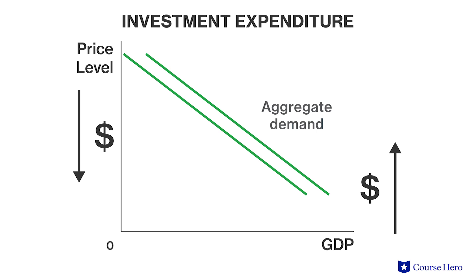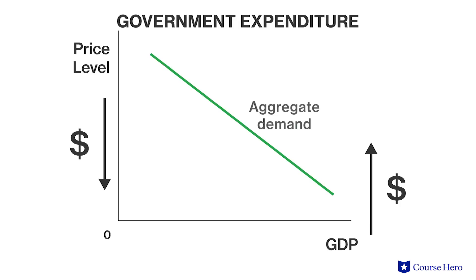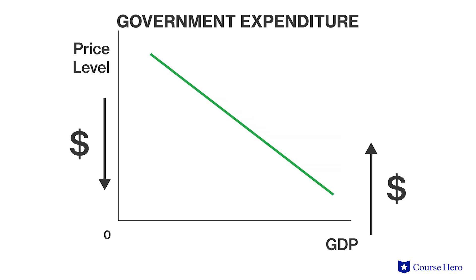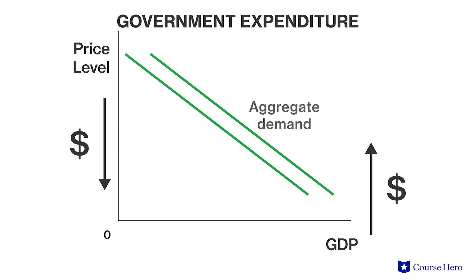The third factor that can shift the aggregate demand curve is changes in government expenditure. When government expenditure increases, the aggregate demand curve will shift to the right. When government expenditure decreases, the aggregate demand curve will shift to the left.